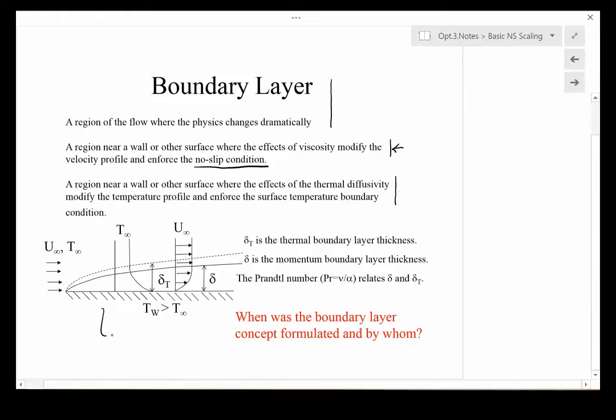We show here a plate or wall surface where there's a free stream velocity U∞ and a free stream temperature T∞. What we're showing is the growth of the boundary layers over this wall, where δ_T is the thermal boundary layer thickness and δ is the momentum boundary layer thickness.